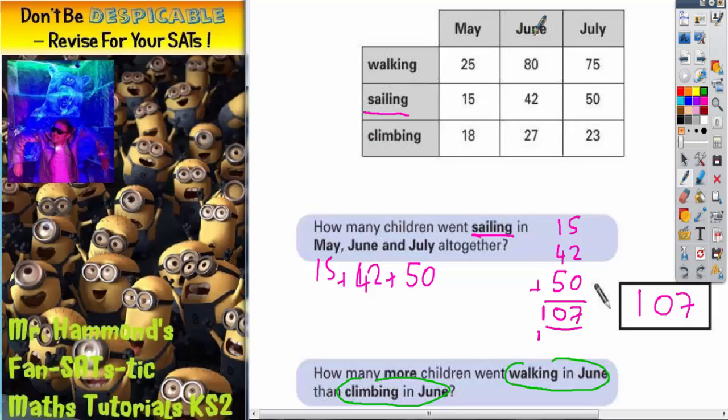Walking in June is 80 - if we read all the way up it goes to June, and all the way across is walking. Climbing in June, still in the June column, is 27 because that's the one for climbing.